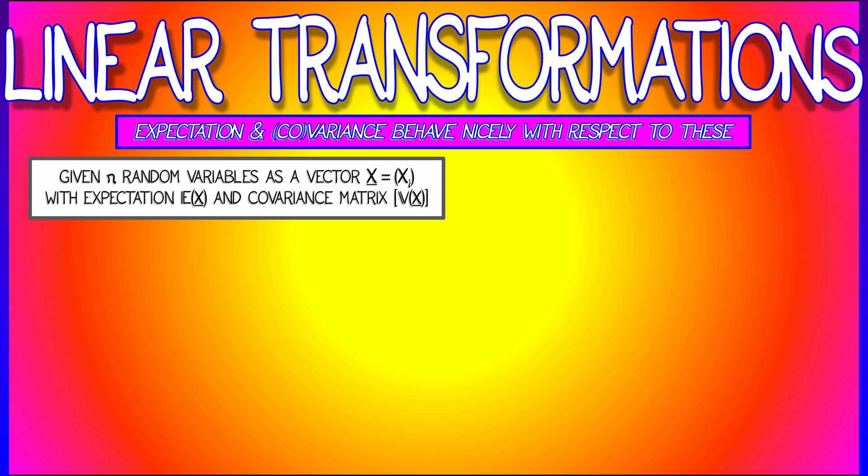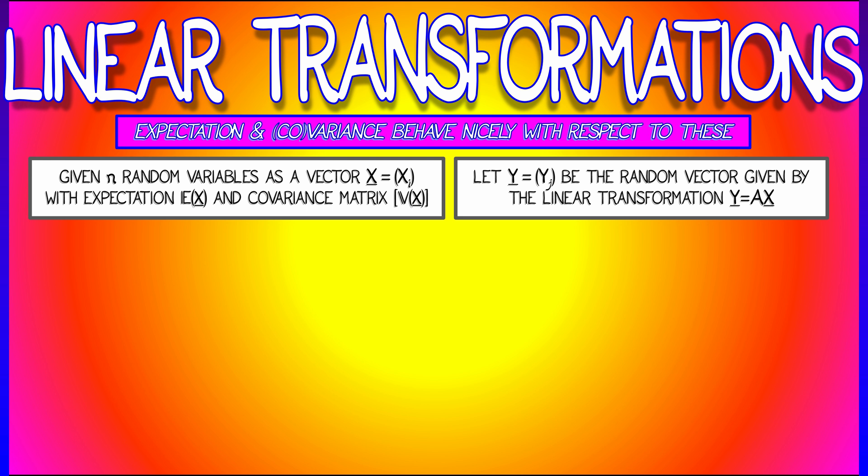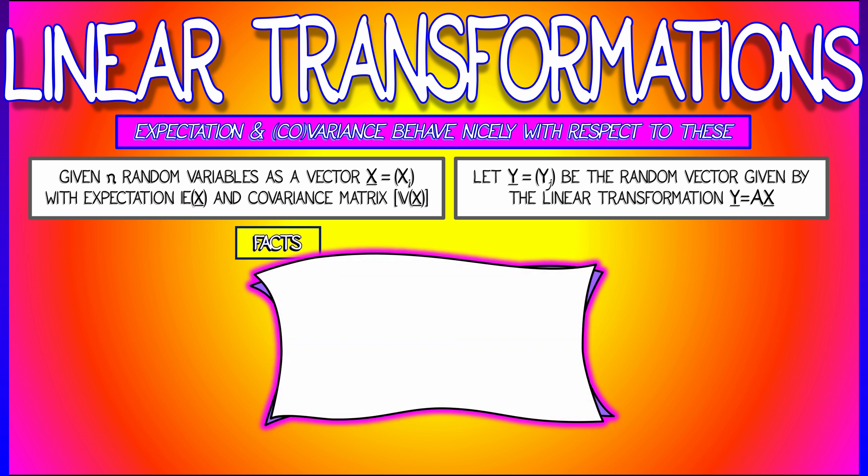Now let's say that we have a linear transformation, a matrix A, and we take linear combinations of these x variables and call them y variables. Stack them into a random vector y that is given as A times x. Then I claim that the expectation and covariance matrix of y behave nicely.